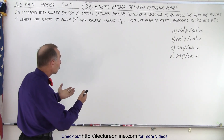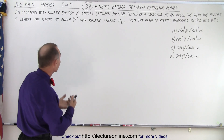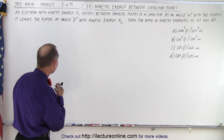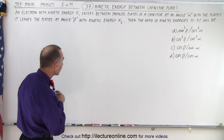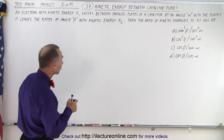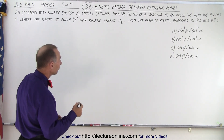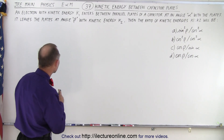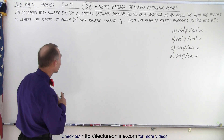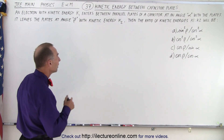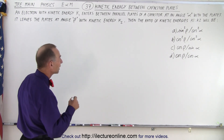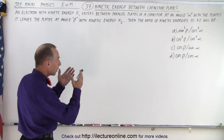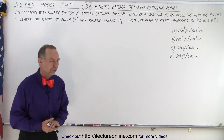It deals with kinetic energy and capacitor plates. An electron with kinetic energy K1 enters between parallel plates of a capacitor at an angle alpha with the plates. It leaves the plates at an angle beta with kinetic energy K2. The ratio of kinetic energies K1 to K2 will be — and we have four possible answers.